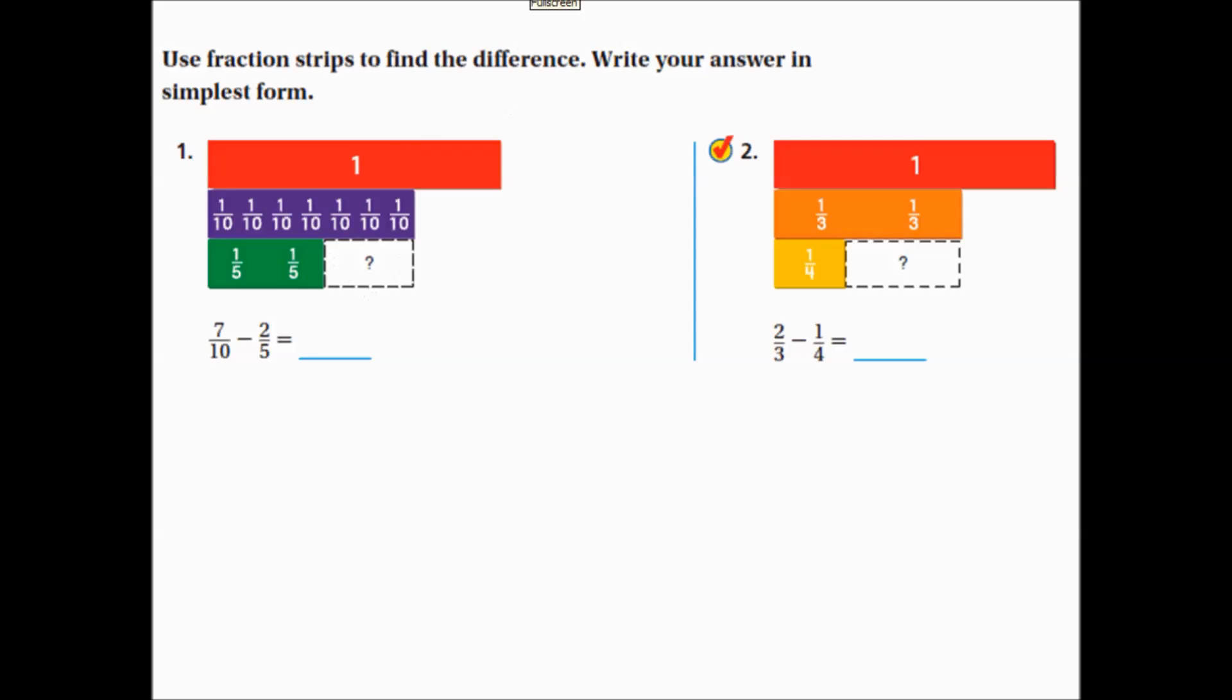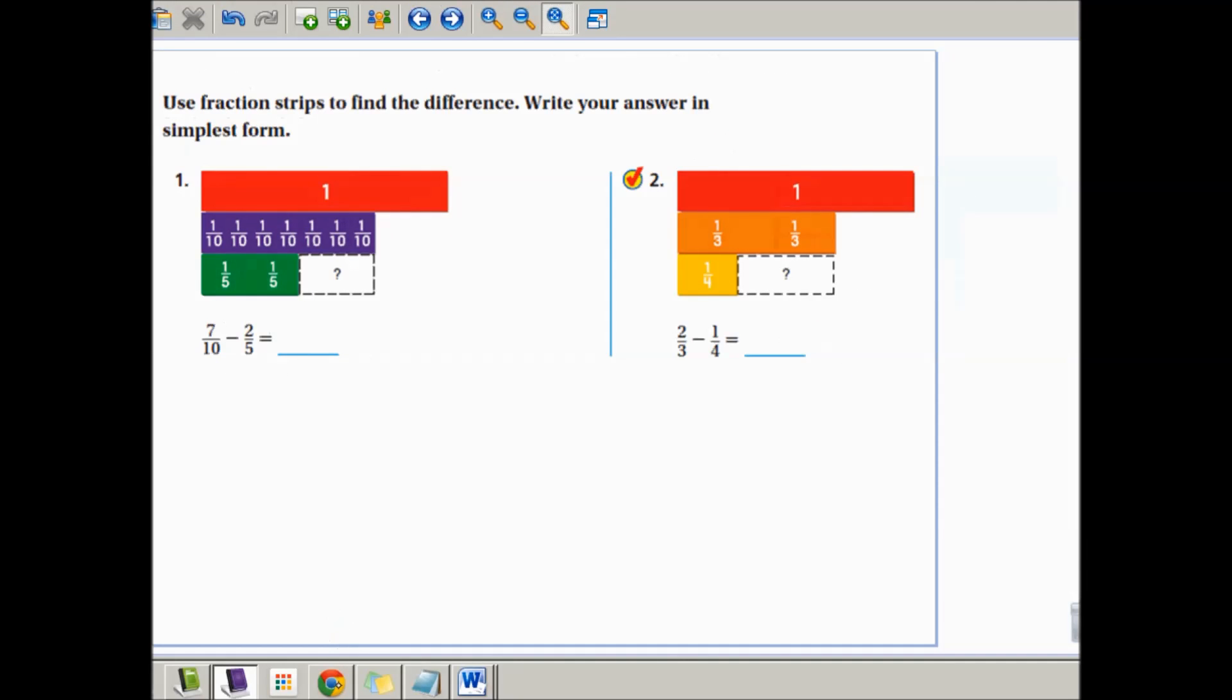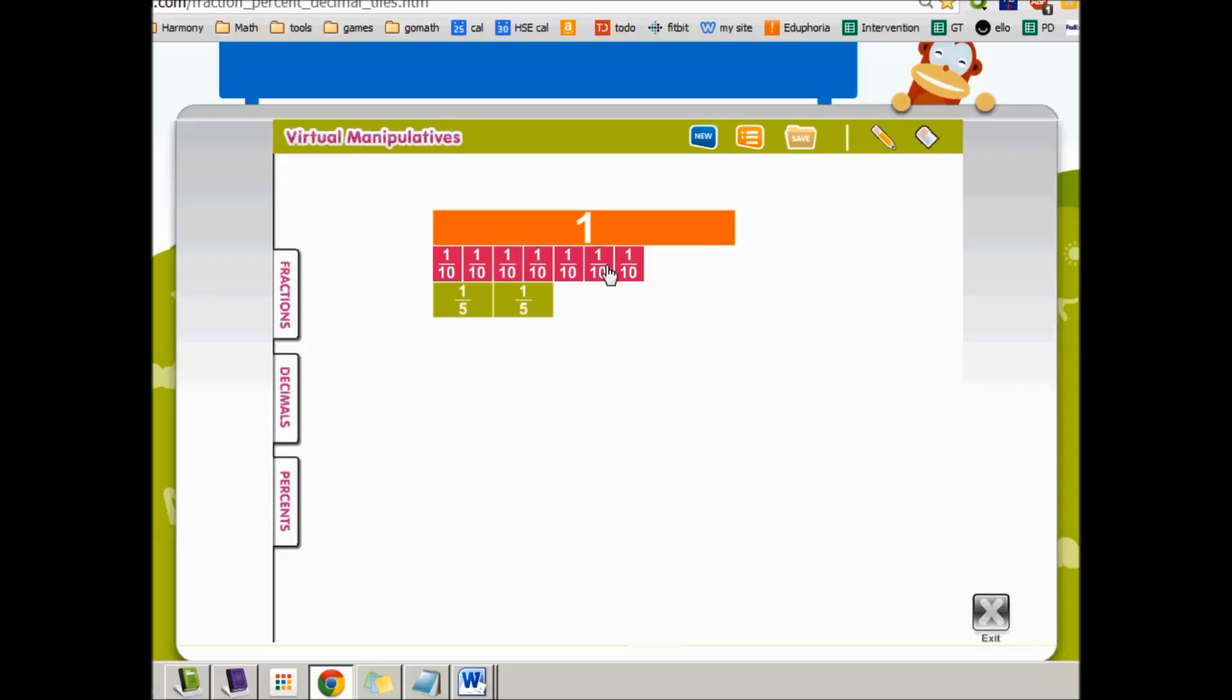So now we're going to go to our fraction strips. Okay, so I've put 7 tenths and 2 fifths on my fraction strips. I put the 7 tenths up here and the 2 fifths down here. So I need to figure out what fits here. Well, I can see that what I have left over actually is 3 tenths, and that does not simplify at all.